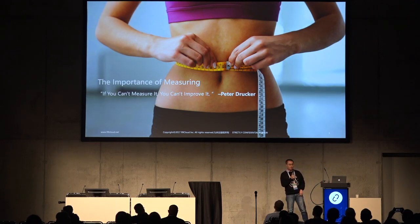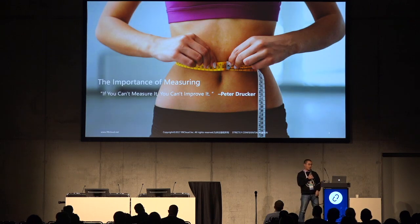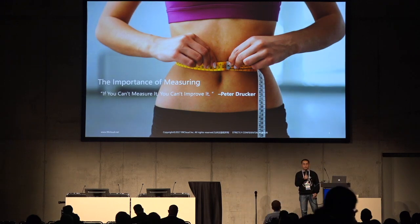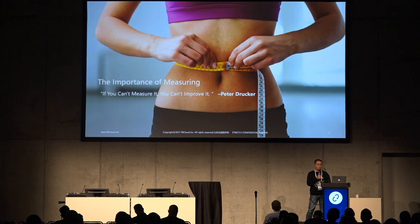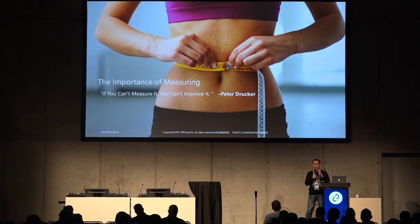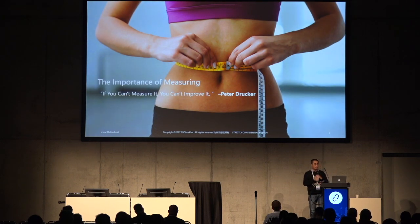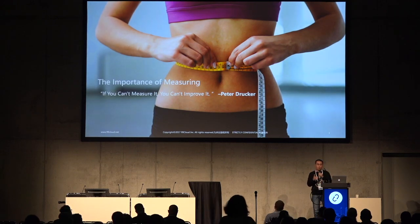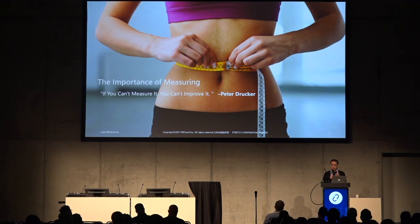Traditionally, when people adopt Agile development, they do not measure it. There are several reasons. First, you may use measurements incorrectly because you don't really understand your metrics. Second, some metrics are wrong and not useful, so you can't follow them to optimize your process. Third, implementing some measurement metrics costs a lot, so you can't spend a lot of resources collecting those measures to help improve your process.